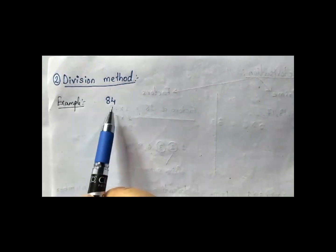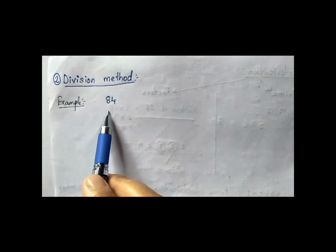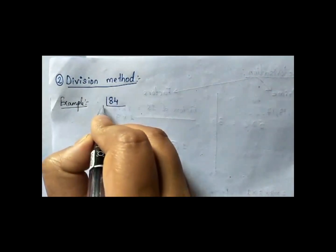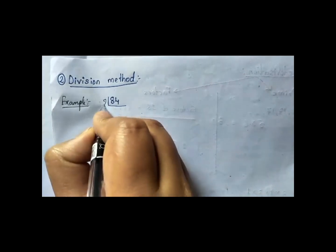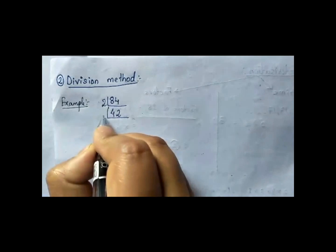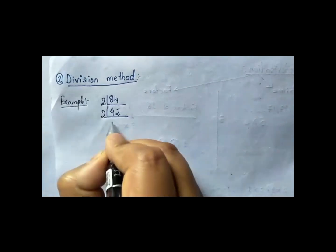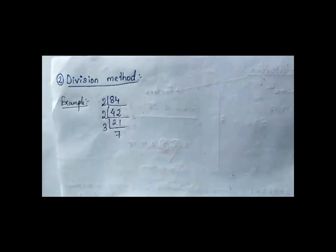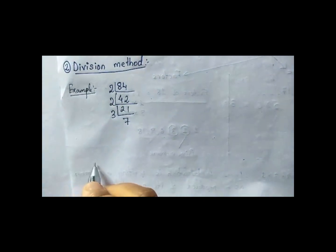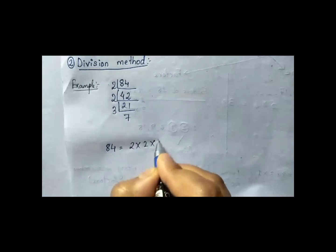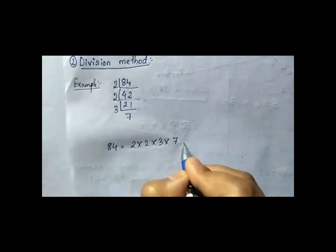Next let us see the division method, using the example of the number 84. So the prime factors of 84 are 2 × 2 × 3 × 7.